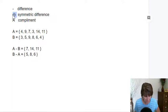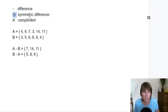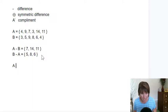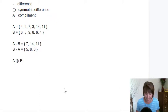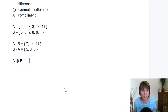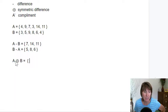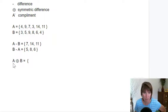Now, the symmetric difference. Notice it says symmetric, so this one is going to be the same in both directions. This is A symmetric difference B. Does this remind you of any operator we've used before? It looks a little bit like the XOR operator, and it actually works like the XOR operator. So this is any element that is in A that's not in B, and any element in B that's not in A — all the elements of A and B except the ones that are in both. So it can be in A or it can be in B, but it can't be in both.